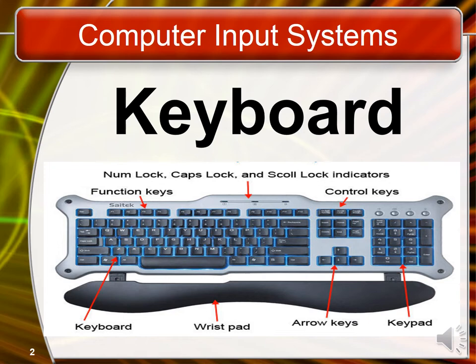A keyboard is a human interface device represented as a layout of buttons. Each button or key can be used to either input a character, symbol, or number to a computer, or to call upon a particular function of the computer. These all act as the main text entry interface for most users. Traditional keyboards use spring-based buttons, though newer variations use virtual keys or even projected keyboards. A keyboard is basically like an electronic typewriter device used to write different documents, and it is composed of a matrix of switches.